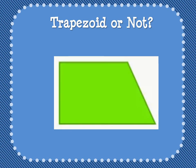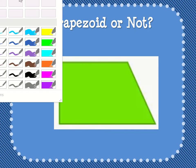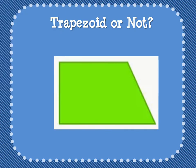Our next one — I want you thinking about if this is a trapezoid. Hopefully you said yes, this is a trapezoid. The reason why this is a trapezoid is, once again, it has two pairs of parallel sides.